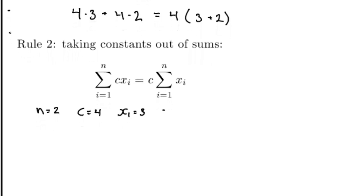On the left hand side, it then says c times x1, which is 4 times 3, plus c times x2, which is 4 times 2. On the right hand side, I have c times a sum, that is, 4 times a sum. I want to multiply c by the entire sum.